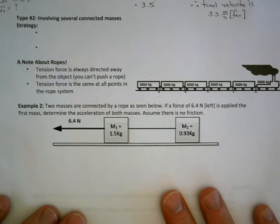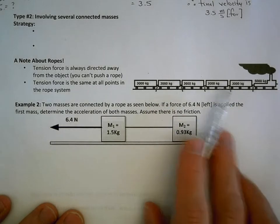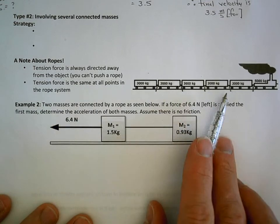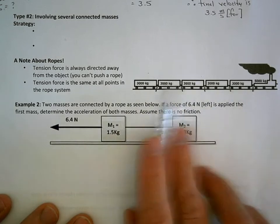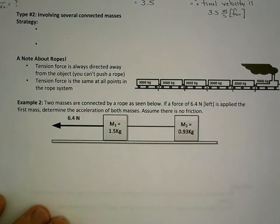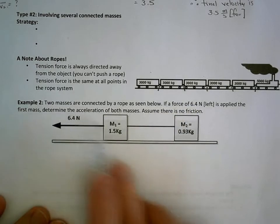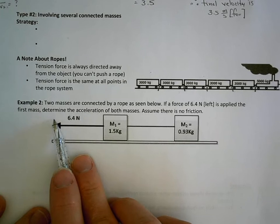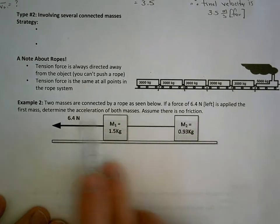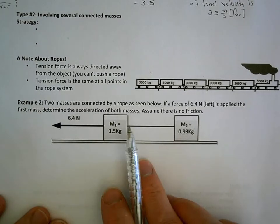The second type of problem involves many different masses connected by rope. Please take a look at the slides to understand how this works, but basically the tension in every rope is always going to be the same, and all objects are going to accelerate at the same acceleration. Here's an example: two masses are connected by rope. If a force of 6.4 newtons left is applied to the first mass, determine the acceleration of both masses. Assume there is no friction — so this is a frictionless surface like ice.